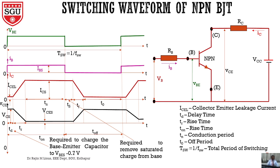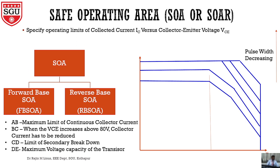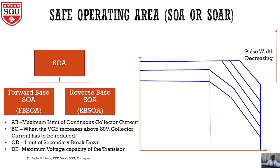So on time is nothing but the sum of delay time, rise time, and on period. Off time is nothing but the sum of storage time, fall time, and the off period. Let us now go to the safe operating area of the bipolar junction transistor.